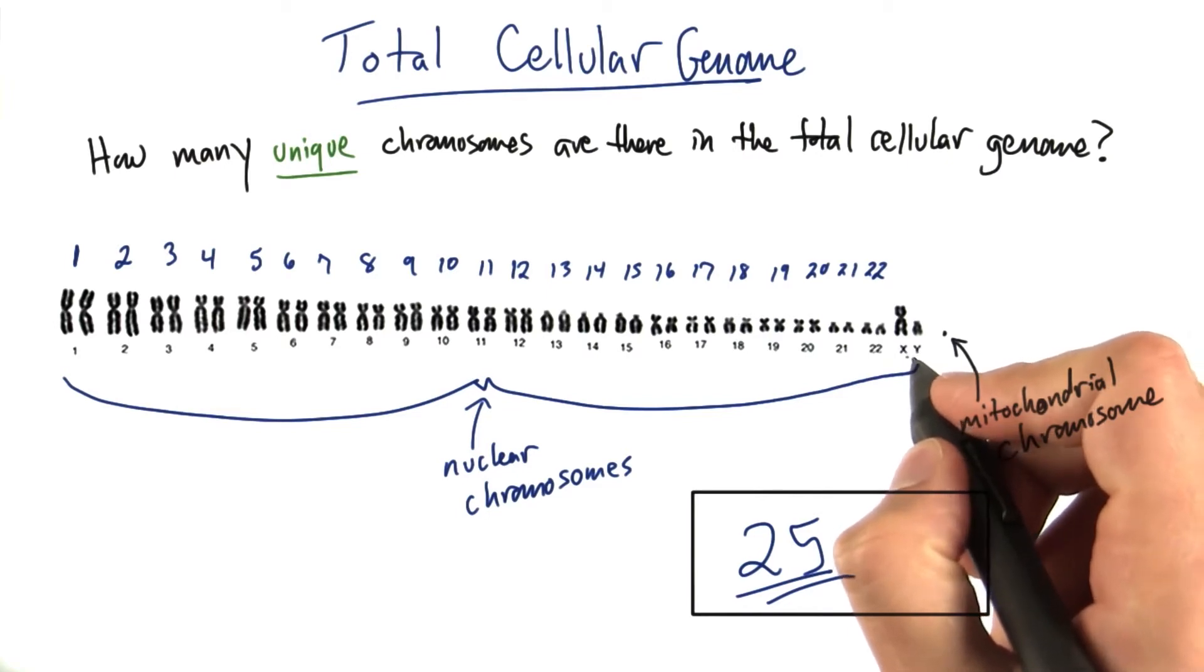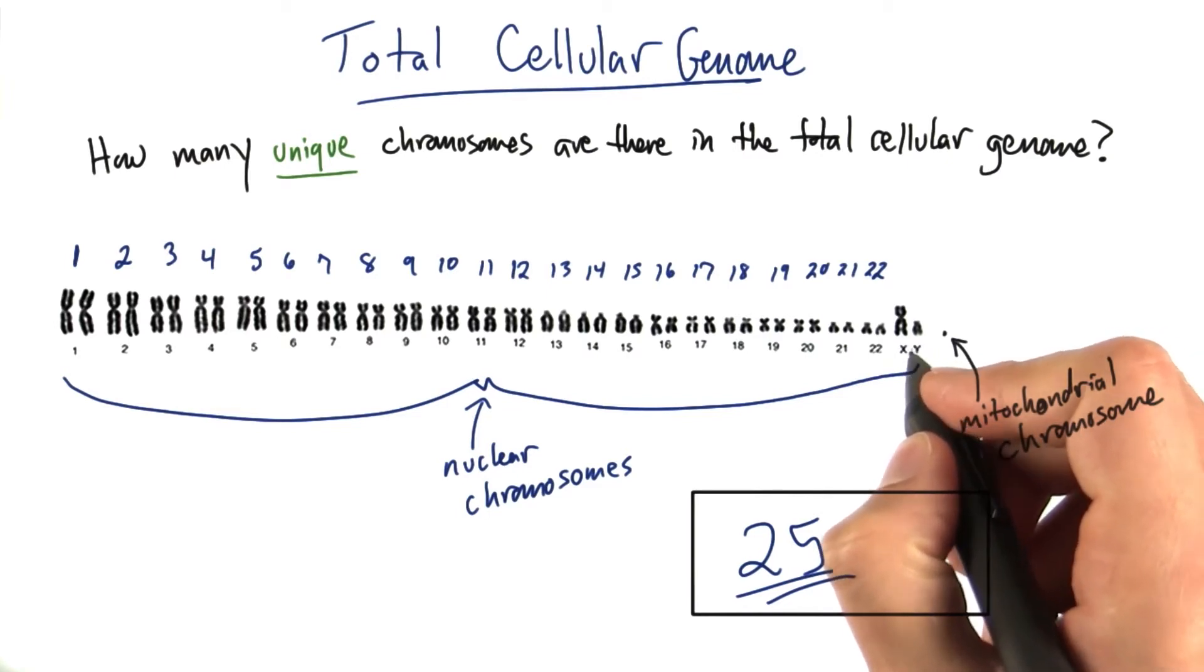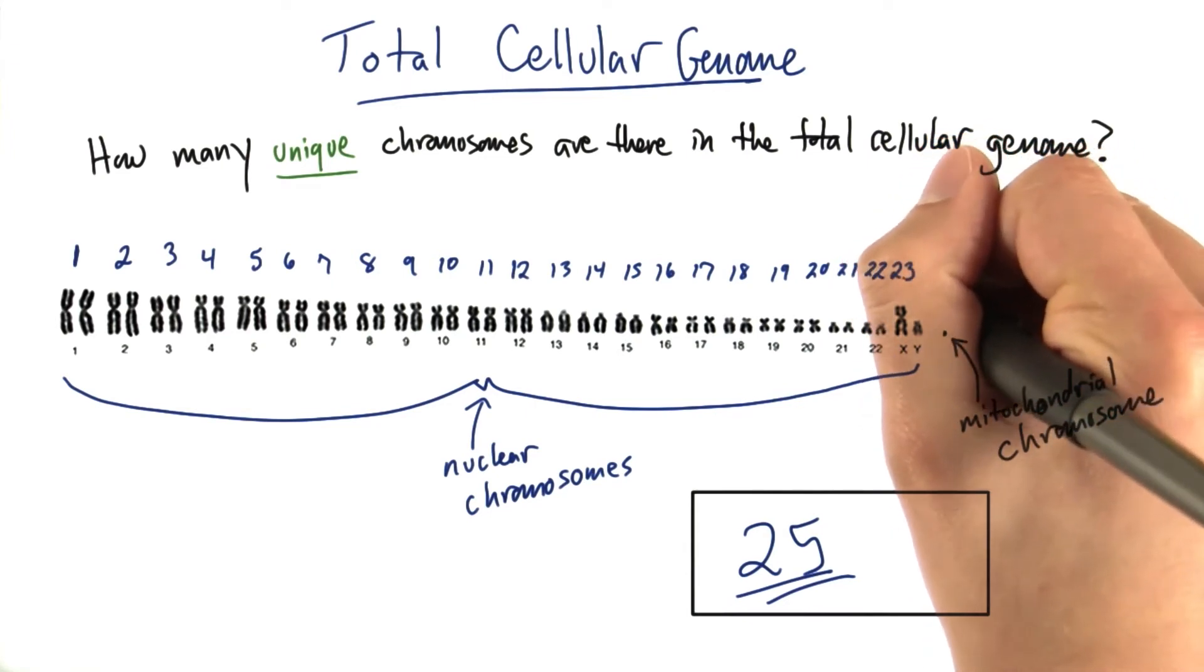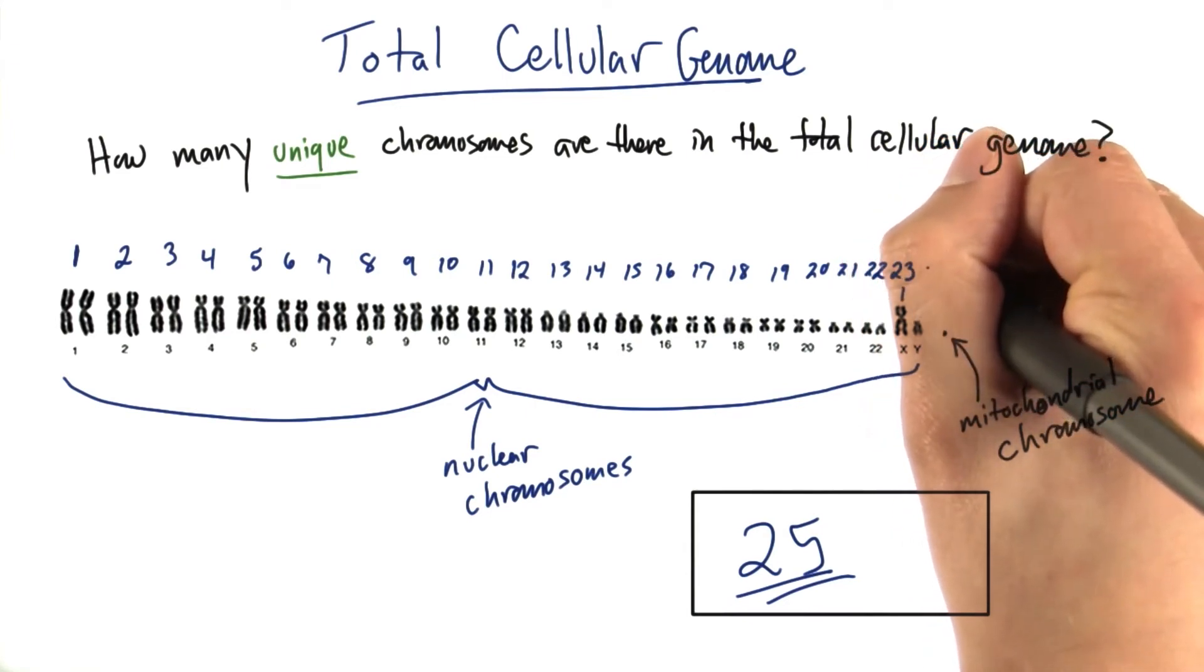And our last pair, the 23rd pair though, we're going to count each chromosome by itself because they're not the same. The X and Y are different. So there's a 23rd unique one and a 24th unique one.